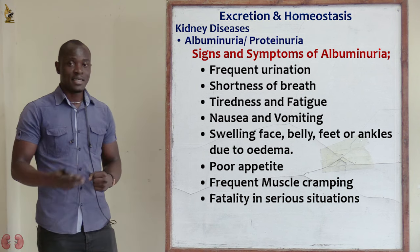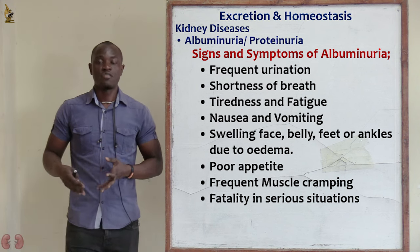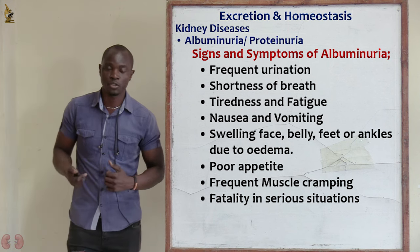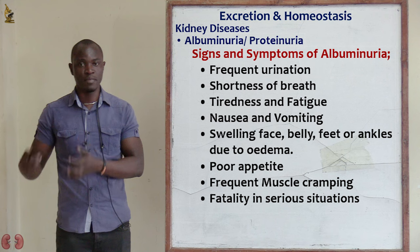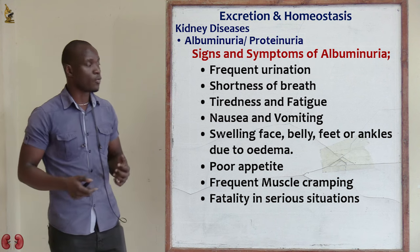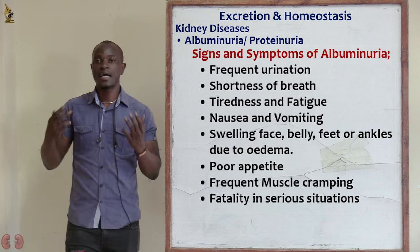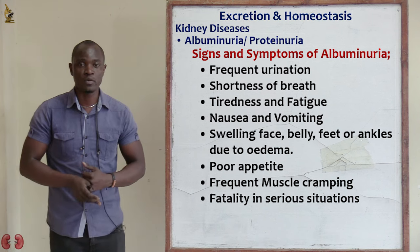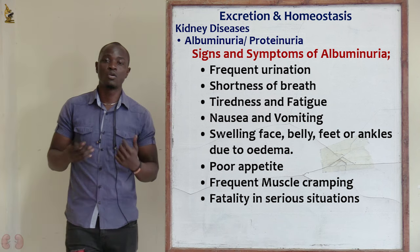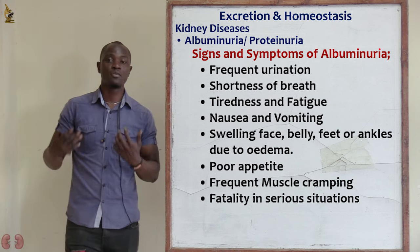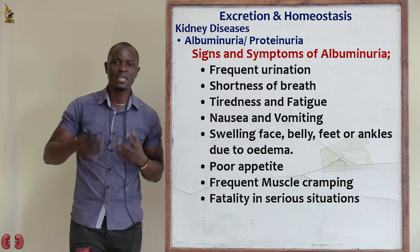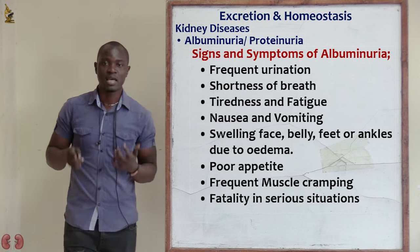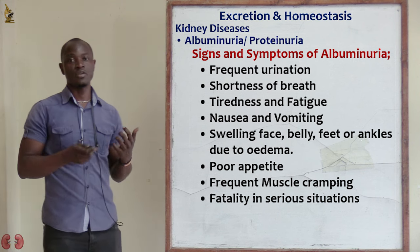Apart from that, we see that if one has a damaged kidney — a kidney which does not function appropriately — they will also suffer from albuminuria. So what are the signs and symptoms of albuminuria? The first sign and symptom is frequent urination. These people have shortness of breath. These people feel tired and fatigued. There is nausea and vomiting. The swelling of the face, belly, and the ankles.